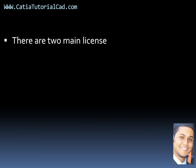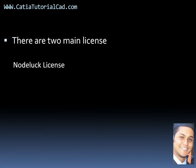There are two main licenses for Katia V5. The first one is Nodelock license and this is a single license. It can only be used on one machine, so if you get a Nodelock license it's going to be used only on one machine and it's not going to be transferable or used on another machine.